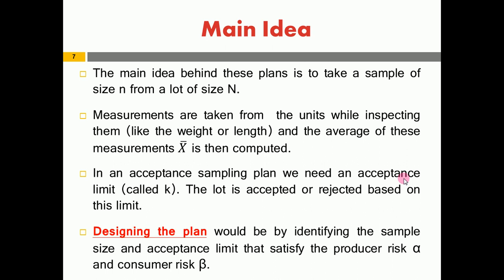Designing a variable sampling plan — similar to the attribute plan — means finding n and k that satisfy the producer risk alpha and consumer risk beta. In the attribute sampling plan, designing it meant finding n and c. Here for the variable sampling plan, designing it means finding n and the acceptance limit k such that they satisfy alpha and beta.